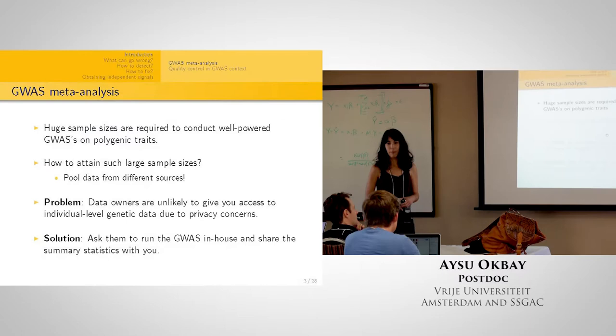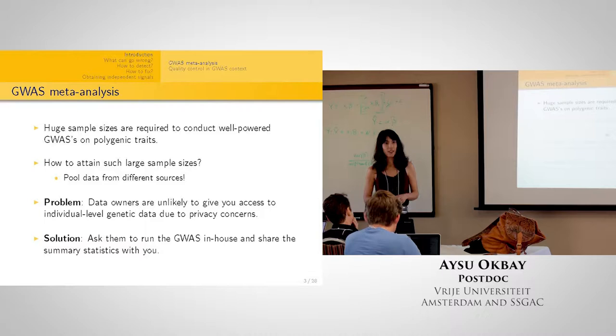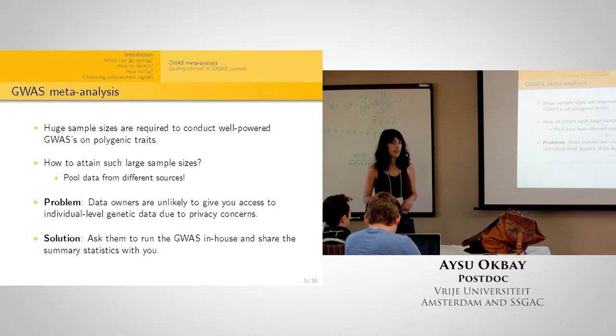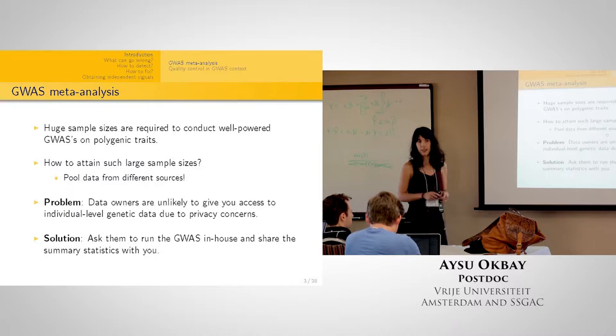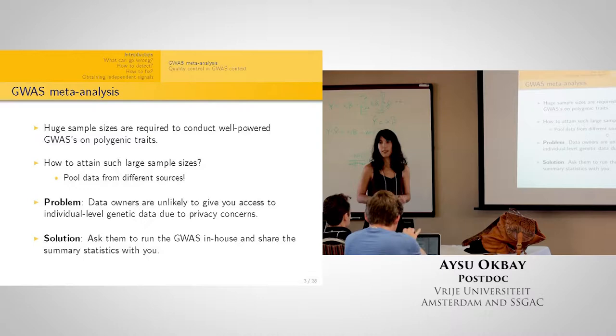Large sample sizes are required to conduct well-powered GWAS. Since you cannot achieve that with a single sample, you pool data from different sources. Because data owners are unlikely to give access to their raw data due to privacy concerns, you ask cohort analysts to run the GWAS for you. They then upload the GWAS summary statistics to a central server, and you meta-analyze them.